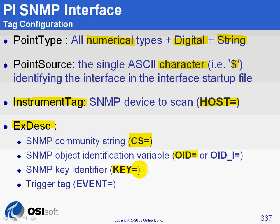At some point in time, if the OID you specified is not associated to the same port on the switch anymore, the tag would not keep collecting data. It would simply tell you 'Configure.' You would see this error code in ProcessBook — 'Configure' — so you know you have to configure it again because it's no longer valid.